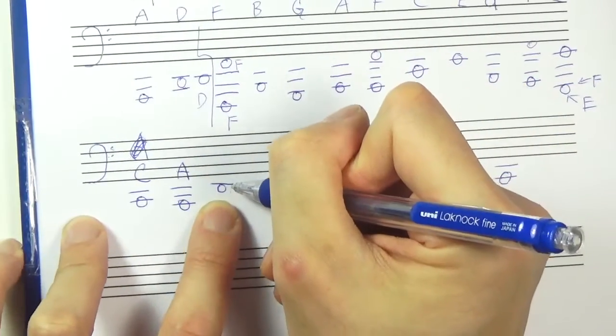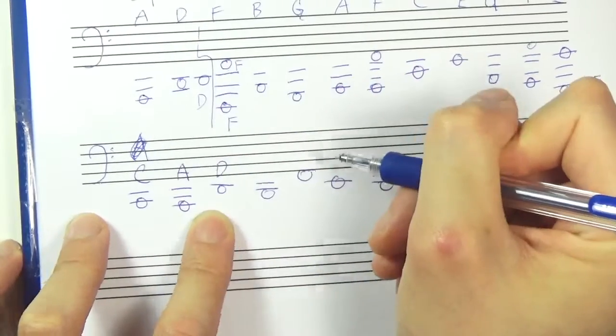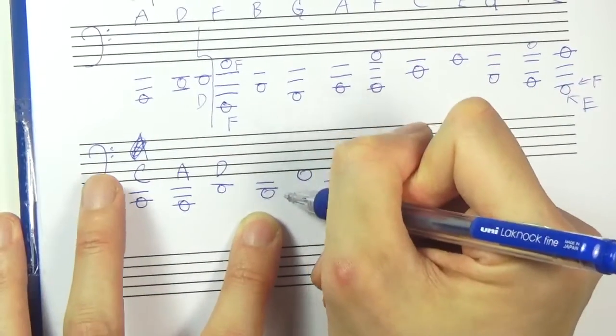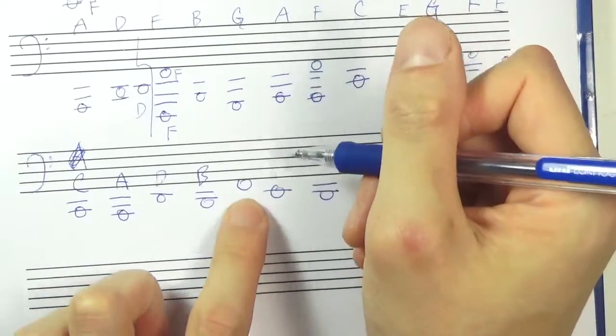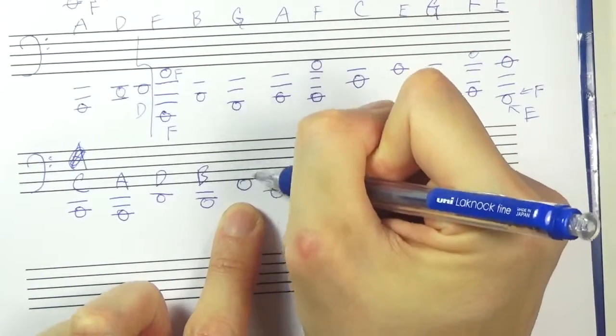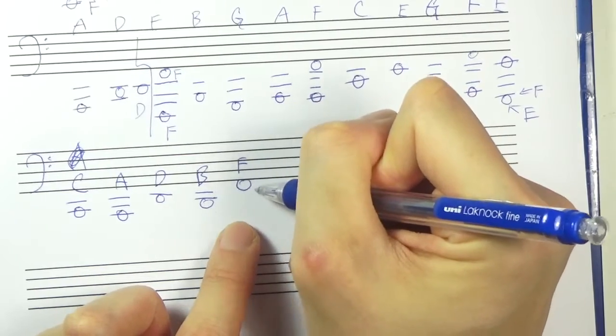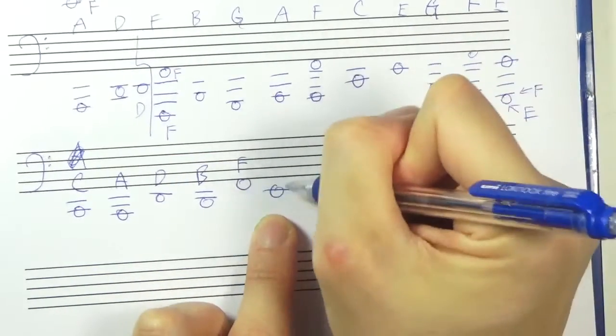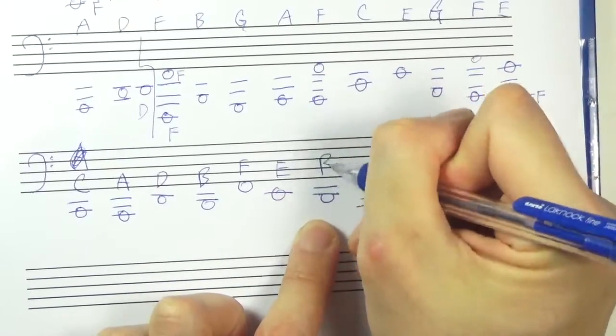This one. One step below the E. So that should be your D. This one. One step below the C. So it should be a B. This one. Should be your F. It's one step below the G note here. It's also one step above. The E line. A, C, E.